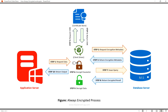In step ten, the results are sent back to the application. Any values that were initially stored in encrypted form are now presented in their plain text versions. This architecture and diagram explains the full process of Always Encrypted. I hope you liked the video, thank you.